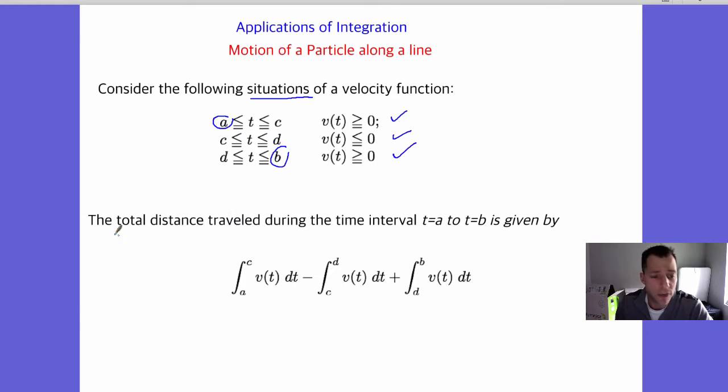So if we wanted the total distance traveled, we could set up the integral from a to b as follows. So here's a all the way to b, and we use the three intervals. If your velocity over an interval is always positive, just take the integral of the velocity over that interval from a to c. If your velocity is always negative over an interval, then you take the opposite of that integral from c to d of v(t). And then the last one here, if you go from d to b and the velocity is always positive, then you can take the integral from d to b of v(t).